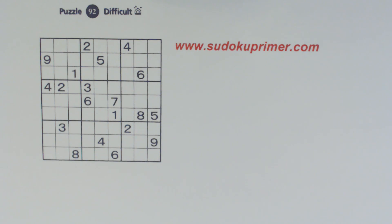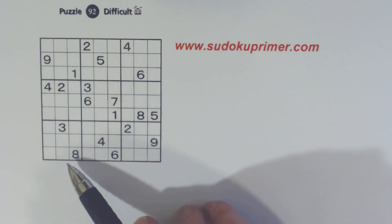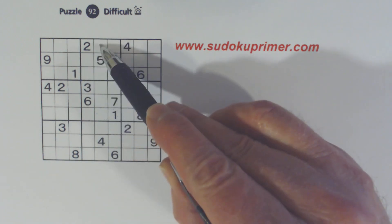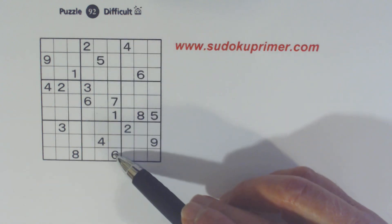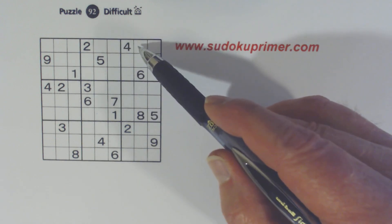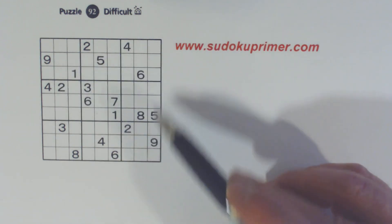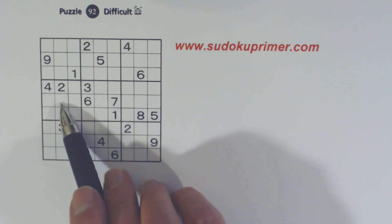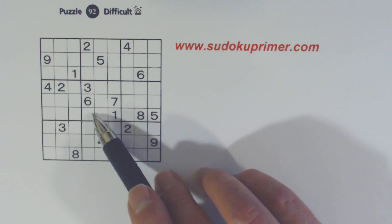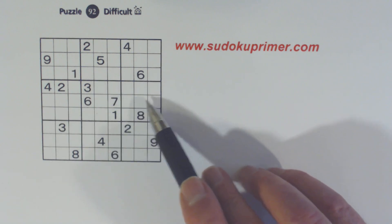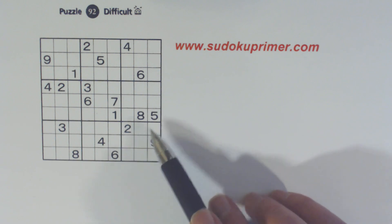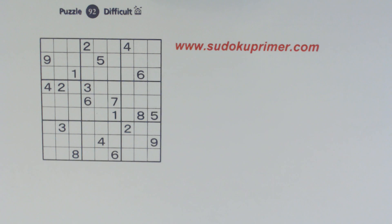In that previous video I mentioned there's something interesting about that puzzle — there are eight sets of twins you can see without filling in any numbers. There's a 1-6 twins, another 1-6, another 1-6, and another 1-6. There are 5-9 twins, 1-8 twins, 4-5 twins, 2-4 twins, 4-9 twins, 2-3 twins, and 6-8 twins. That's the first time I've ever seen a puzzle with that many twins at the very beginning.